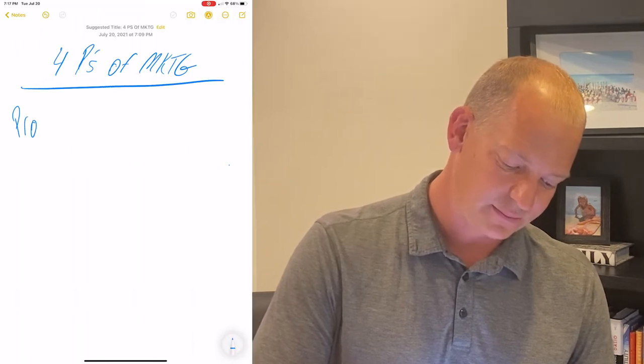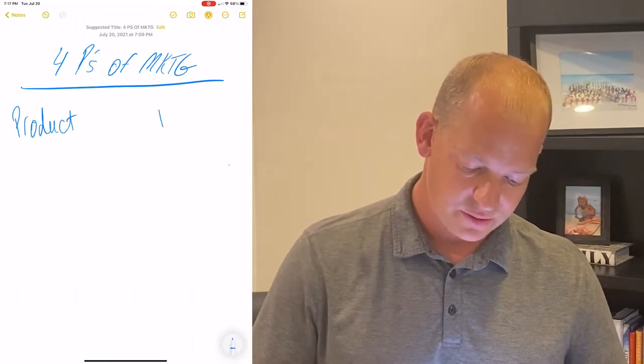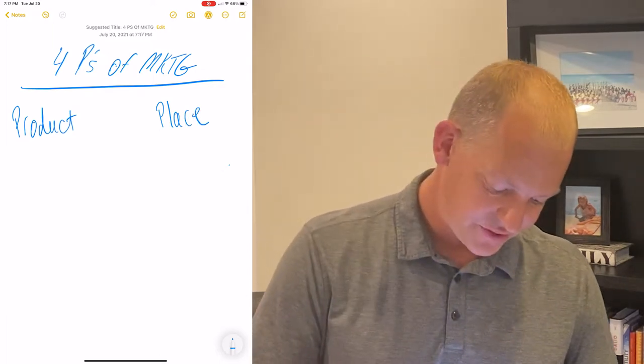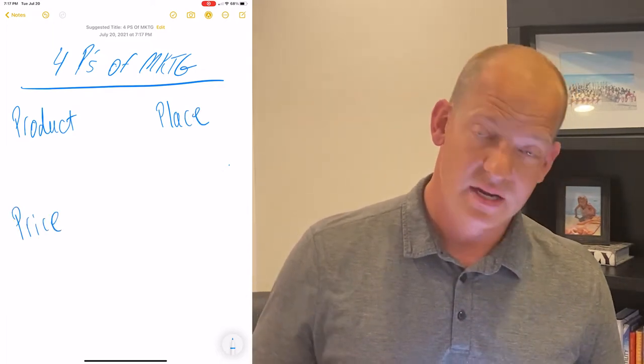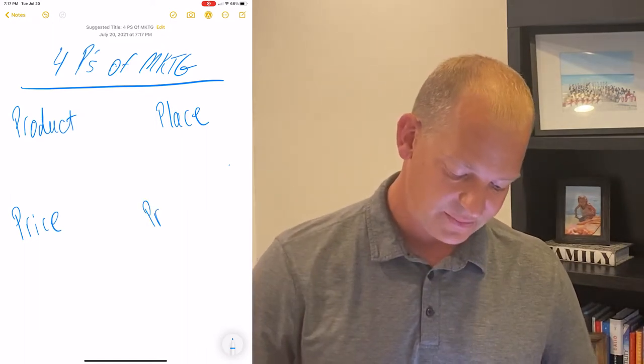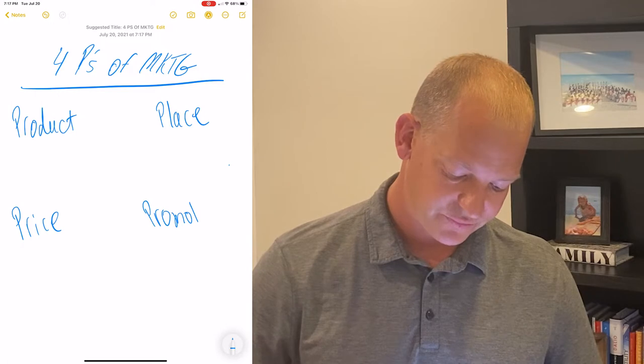Here are the four P's of marketing that we're going to use to have great seller conversations. P number one is product. P number two is place. The third P is price. And then the fourth P, the one that we have the most control over as agents, is promotion.